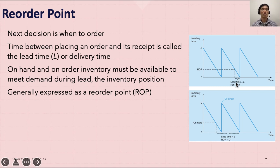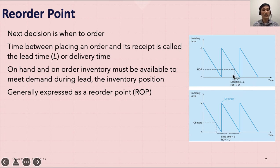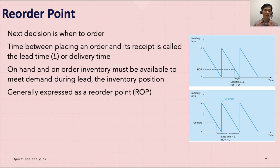Looking at the graph, if lead time is seven days, you need to place an order seven days before your inventory depletes to avoid a stockout. The reorder point has a close relationship with lead time and daily demand. For example, if daily demand is 1 unit and lead time is 10 days, you must order 10 days in advance so the order arrives on time.